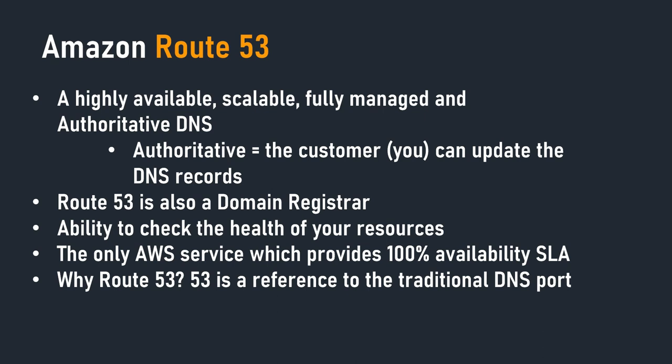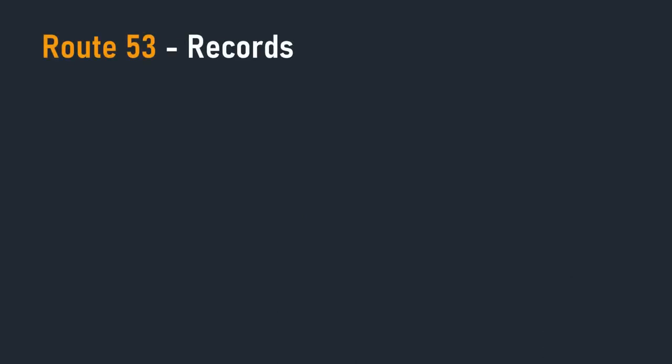Route 53 allows you to register your own domain names such as example.com, and we will do this in the hands-on to get started with the service. You also have the ability to check the health of resources within Route 53, which we will see in this section. It is the only AWS service that provides a 100% availability SLA. Finally, the name Route 53 — the 53 is a reference to the traditional DNS port used by DNS services, hence the name Route 53.